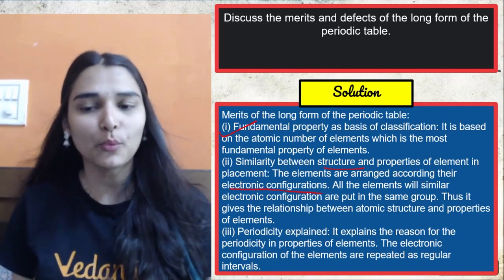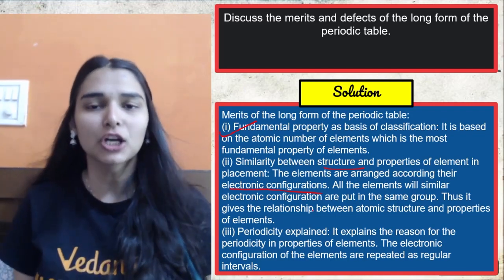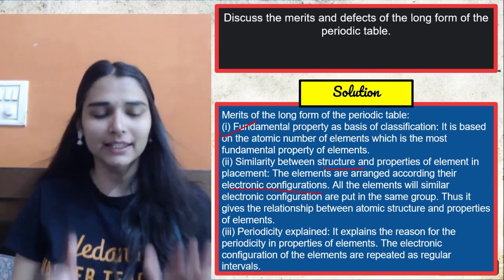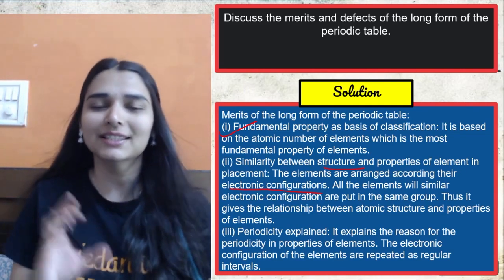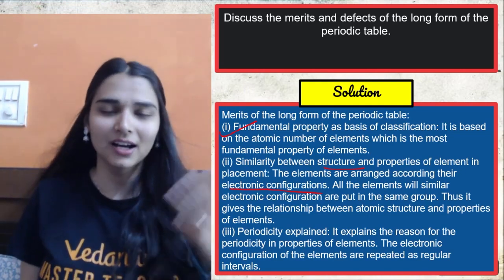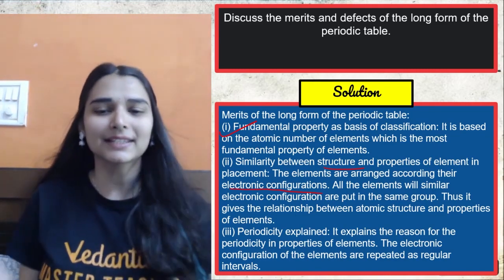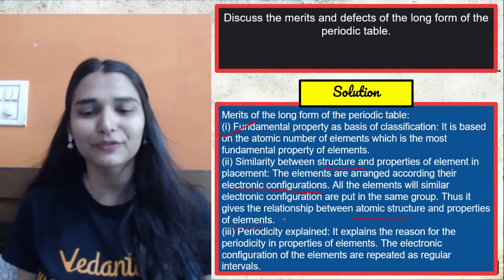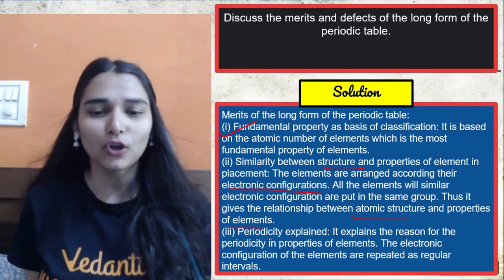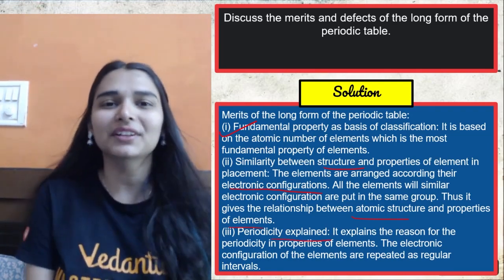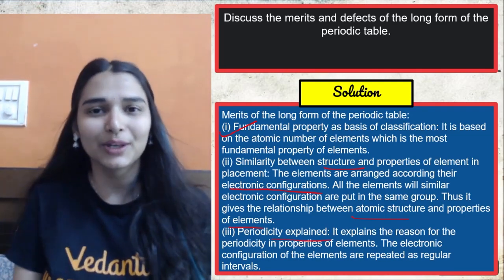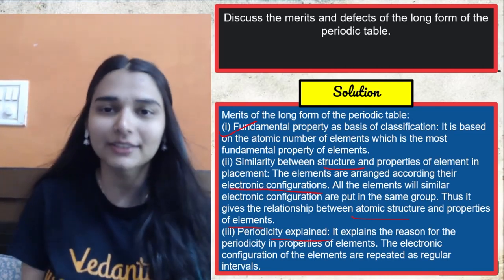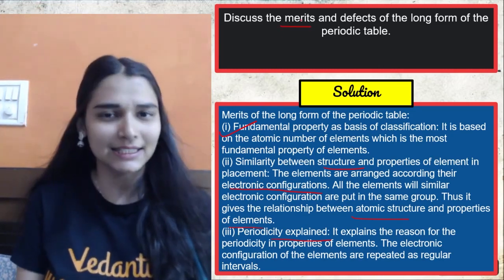Similarity between the structure and properties of elements in the placement. So you know that he talked about the electronic configuration. So elements which are falling in the same vertical column, they were found to have the similar valence shell electronic configuration, the same number of valence electrons, same valency. So the relationship between atomic structure and property of elements was beautifully explained there. And also periodicity was explained. The reason of the repetition in the properties of elements, that was very much aligned with the electronic configuration. It was very well explained. So merits you can easily write.